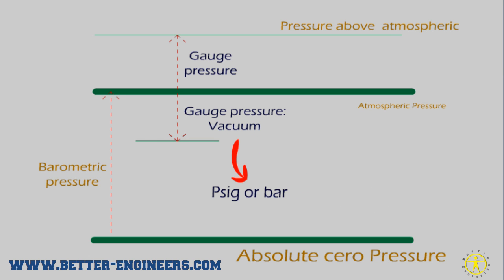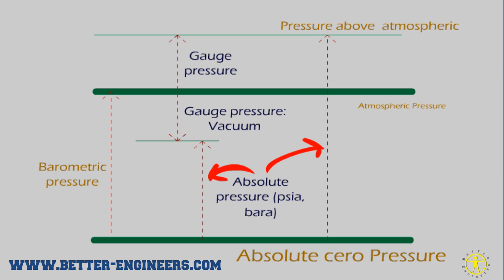The units normally used are PSIG or bars. There can also be absolute pressure, which is the one measured relative to the absolute zero pressure. The units used are normally PSIA or bar A, and it can also be above the atmospheric pressure.